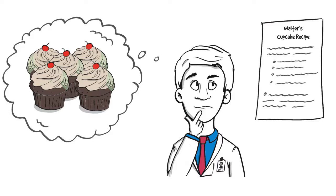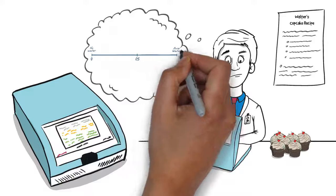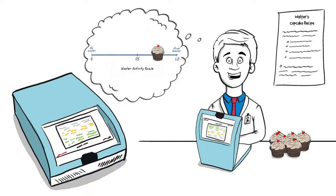If Walter had a NOVASINA water activity meter, he would have known that the water activity level in his cupcake is too high and he could adjust his recipe to avoid spoilage.